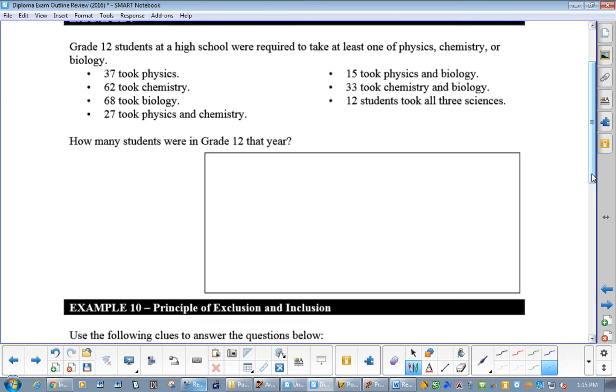Let's just get through these two. Grade 12 students in high school are required to take at least one of Physics, Chem, or Biology. So, there's no one on the outside because they have to take at least one. So, we've got Physics, we've got Chem, and then we have Bio. Now, I always try to work from the bottom. This one is our very middle. So, we get the 12 students took all three.